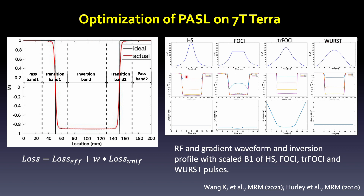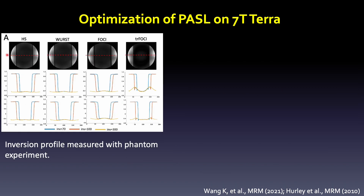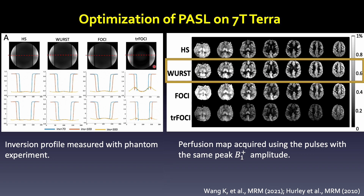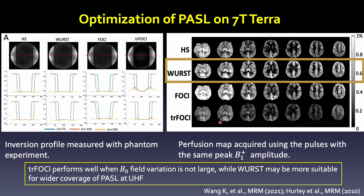Here are their waveforms as well as their simulated profiles at different B1 magnitudes. Here is the inversion profile in a gel phantom with equal SAR and equal B1 magnitude. Here are the in vivo results using these four different adiabatic pulses. Our results show that the WURST pulse performs most optimally in terms of inversion efficiency and inversion band uniformity. There is also literature showing that the TI-foresight pulse performs optimally when B0 field variation is not large. Our suggestion is that WURST may be more suitable for wide coverage PASL.